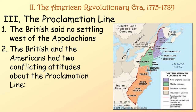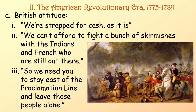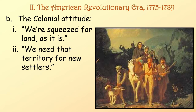Then you had the Proclamation Line. The British said no settling west of the Appalachians. The British and the Americans had two conflicting attitudes. The British attitude was: we're strapped for cash, we can't afford to fight a bunch of skirmishes with the Indians and the French who are still out there, so stay east of the Proclamation Line and leave those people alone. The colonial attitude was: we're squeezed for land as it is and we need territory for new settlers.